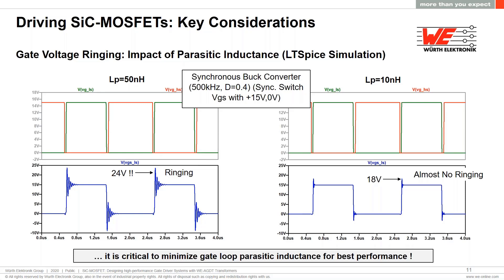This confirms that for driving fast-switching SiC MOSFET devices where high dv/dt is generated, minimizing gate loop parasitic inductance is much more critical than in standard silicon applications, which switch much slower.